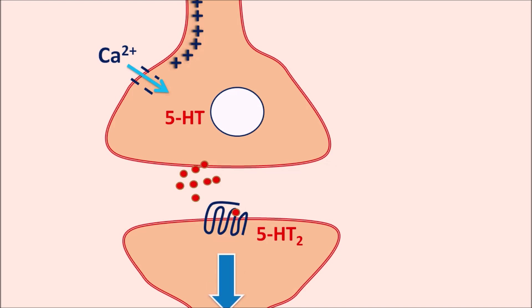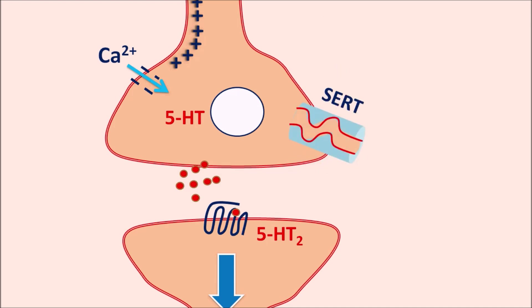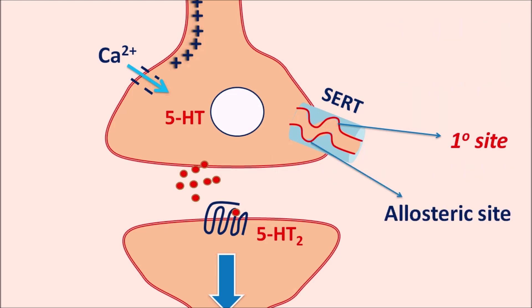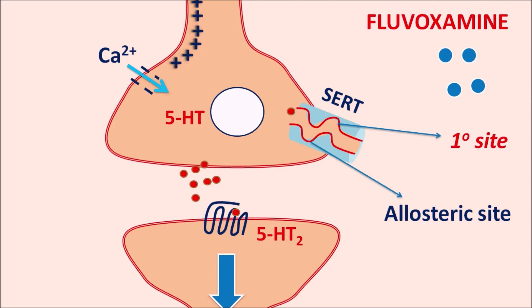The released 5-HT can be taken back into the nerve terminal by the SERT — serotonin reuptake transporter. This transporter has a primary side and an allosteric site. Through this transporter, 5-HT is taken into the nerve terminal, which reduces the action of 5-HT.